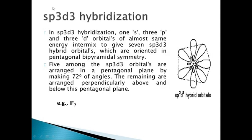SP3D3 hybridization involves one S, three P, and three D orbitals, giving seven hybrid orbitals of equivalent energy and shape oriented in pentagonal bipyramidal symmetry. Five orbitals lie in the same plane and two are above and below the plane. The bond angle in the pentagonal plane is 72 degrees and the axial bond angle is 90 degrees. The example is IF7.